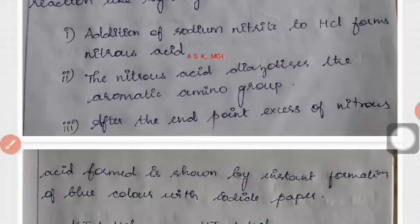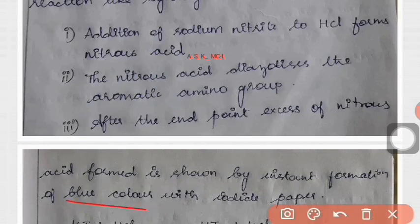Now you can understand how the end point is determined. Nitrous acid HNO2 reacts with potassium iodide to give iodine, which reacts with starch to give the famous blue color.